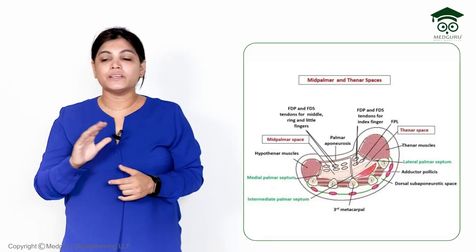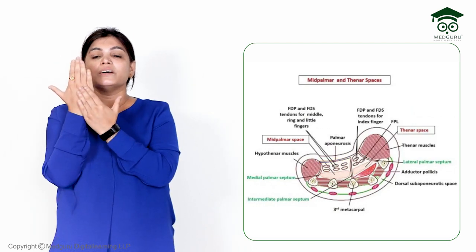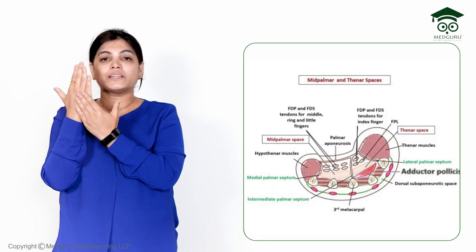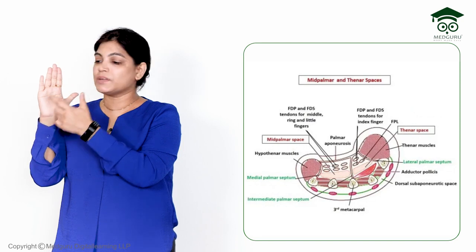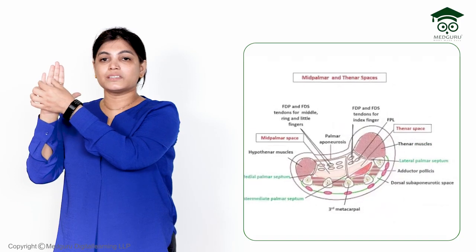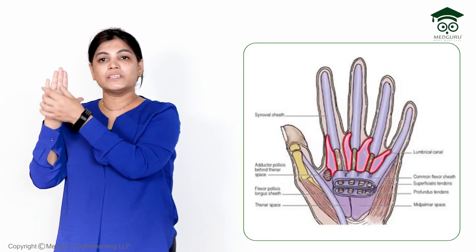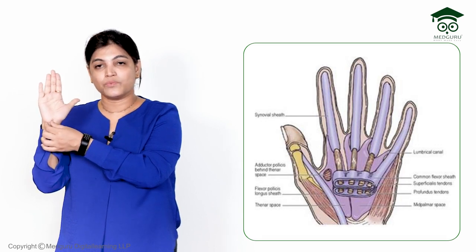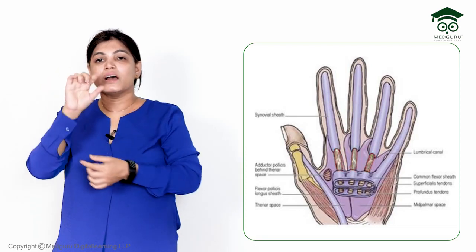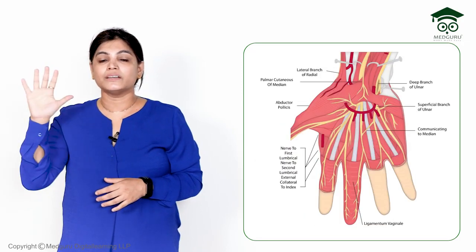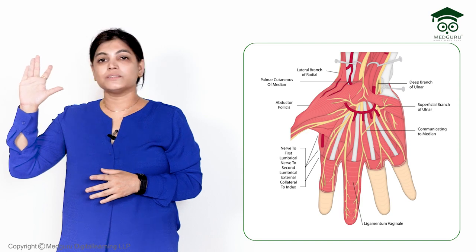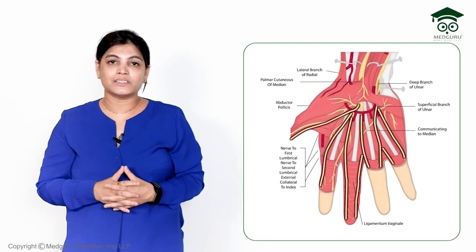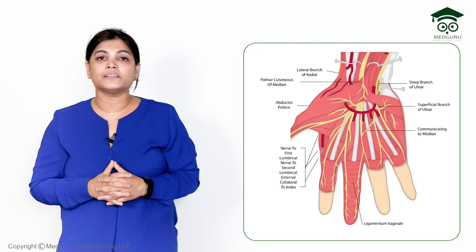Quick revision of mid palmar space: anteriorly — medial part of palmar aponeurosis; posteriorly — interossei muscles, fourth and fifth metacarpals, and a part of adductor pollicis; medially — medial intermuscular septum; laterally — lateral intermuscular septum; distally — lumbrical canals for medial three fingers; proximally — closed, not communicating with the forearm space in normal conditions, sealed by the synovial sheath around the flexor tendons. Contents: medial three long flexor tendons, superficial palmar arch, second, third, and fourth lumbrical muscles, and three-and-a-half digital nerves and vessels.